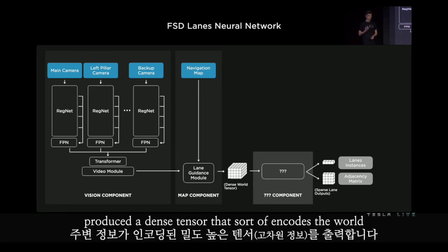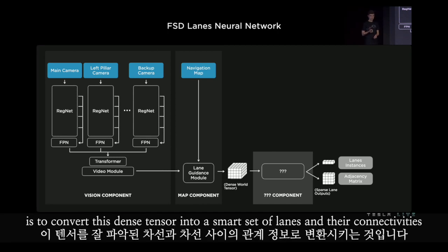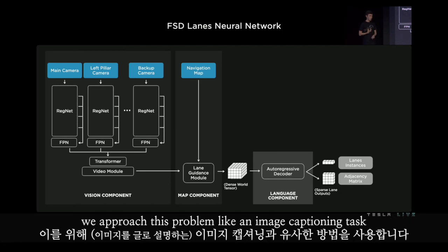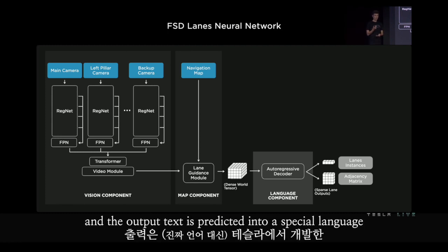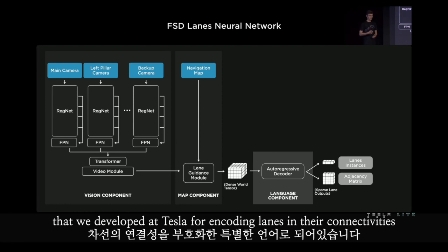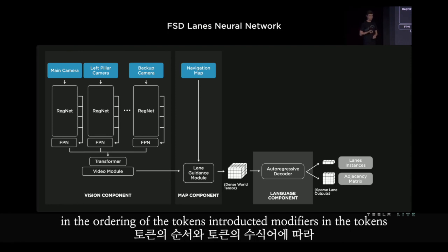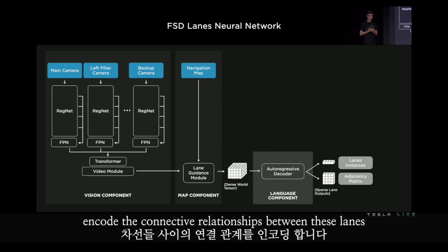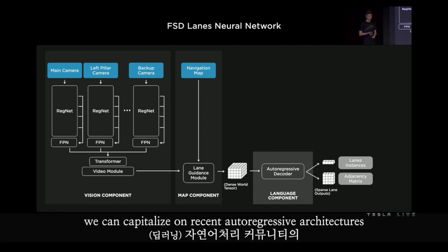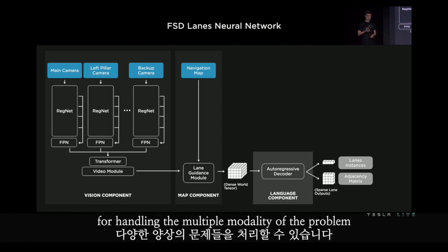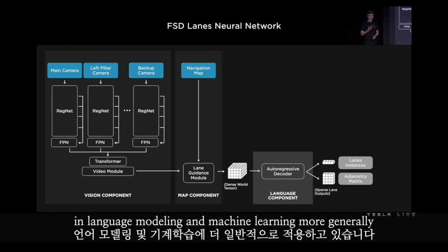The first two components produce a dense tensor that encodes the world. But what we really want is to convert this dense tensor into a sparse set of lanes and their connectivities. We approach this like an image captioning task, where the input is the dense tensor and the output is predicted into a special language we developed at Tesla for encoding lanes and their connectivities. We can capitalize on recent auto-regressive architectures and techniques from the language community. We're not just solving a computer vision problem — we're also applying state-of-the-art language modeling.